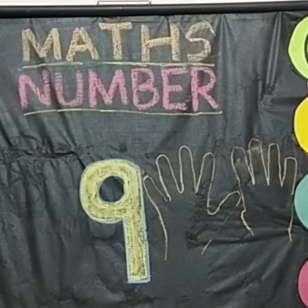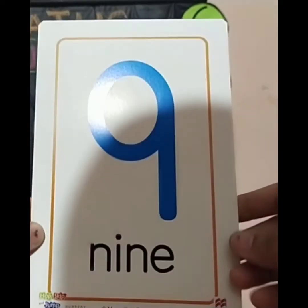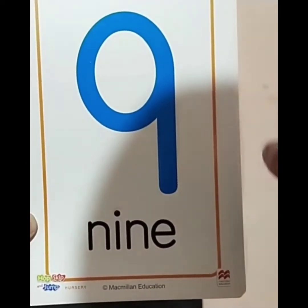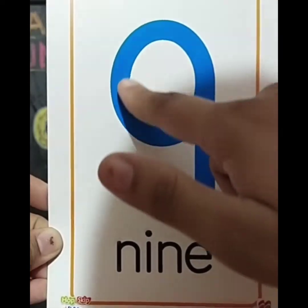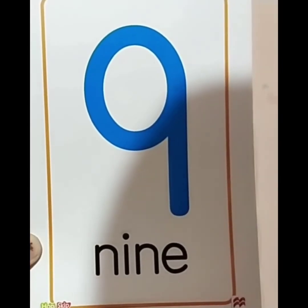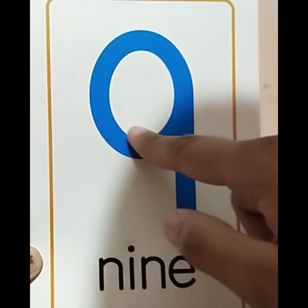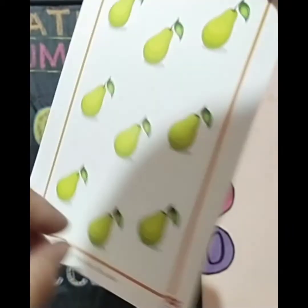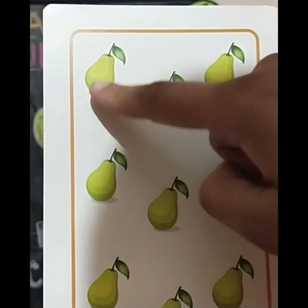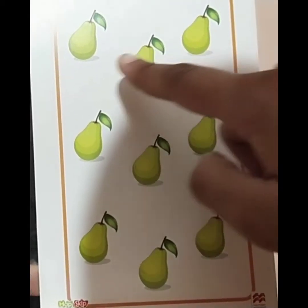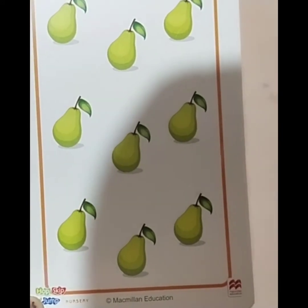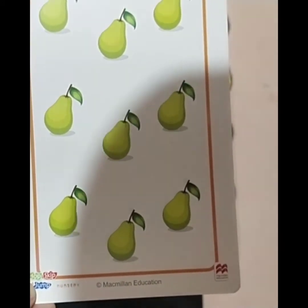Now let's go with the formation of 9 on the flash card. Which number is this on the flash card? It's a 9. Number 9 — trace a standing line, then make a forward curve. If I turn the flash card, you can see many pairs. Start counting the pairs: 1, 2, 3, 4, 5, 6, 7, 8, 9. There are 9 pairs on the flash card.